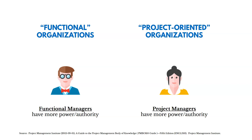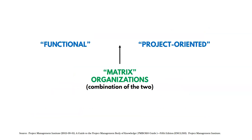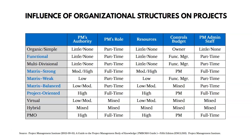These are two ends of a spectrum. In the middle, you have matrix organizations, which are a combination of those two. Most organizations really have matrix designs. Here's an overview of all the different types of organizational structures. On the left-hand side you'll see different organizational structures, and on the top you'll see how they affect the authority of the project manager, whether their role is part-time or full-time, whether they have resources and budget control, and whether they have project management administration staff — staff that helps them maintain schedules, costs, and monitor risks.